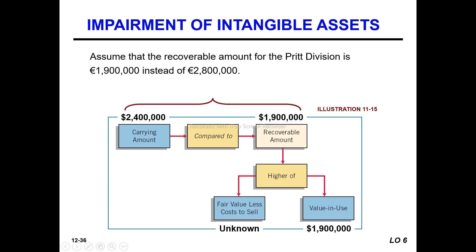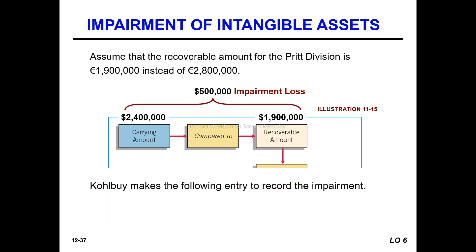It is an impairment. If there's a loss on impairment, the credit is to debit goodwill. Goodwill is being written down. This represents a cash-generating unit. The impairment is allocated against goodwill first when impairing the cash-generating unit.